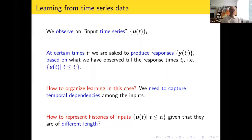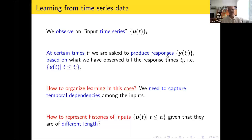We observe an input time series u_t. Inputs are denoted by u, t is the time index. I'm going to consider discrete time, though you can imagine continuous time as well. At certain times t_i, we are asked to produce a response. Our response y at time t_i is going to be based on potentially everything we have observed up to time t_i. Here is the set of all inputs I need to consider in order to produce my response at time t_i.